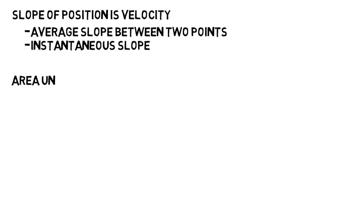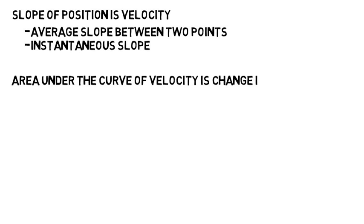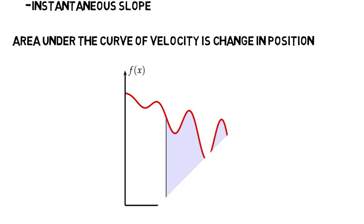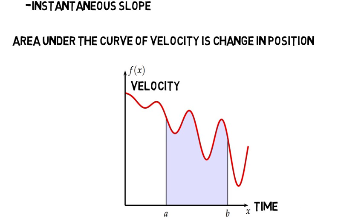Well believe it or not, the area under the curve of velocity is the change in position. So if they gave you a graph, shown in red, that represented some random changing velocity over time, the area of this shaded region tells us the change in position during that time between A and B.